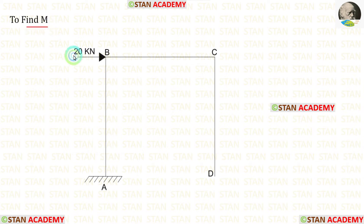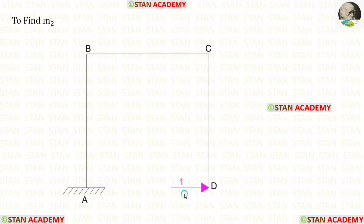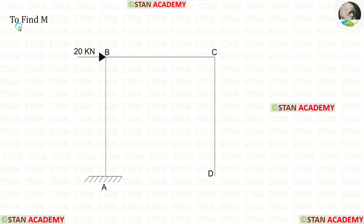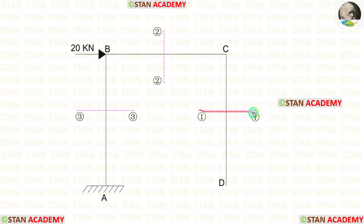Then we remove all loads from the frame and apply a unit load in the first coordinate to find moment M1. Then we apply a unit load in the second coordinate to find M2. Finally, we apply a unit moment in the third coordinate to find M3. Now we are going to find the moment M. We make sections in the frame. There are three different parts: DC, CB, and BA. I have made the first section in CD, the second section in CB, and the third section in BA.